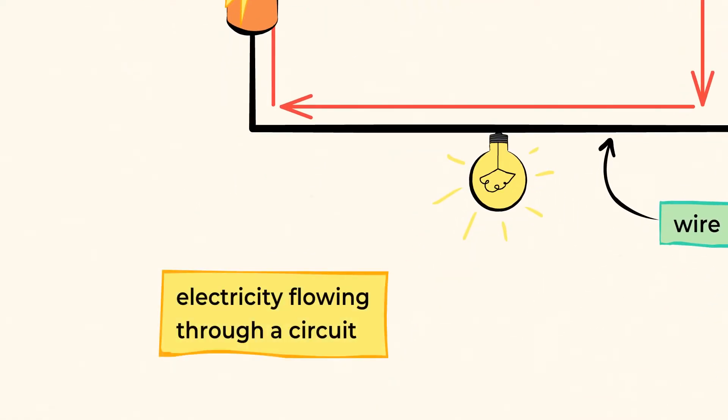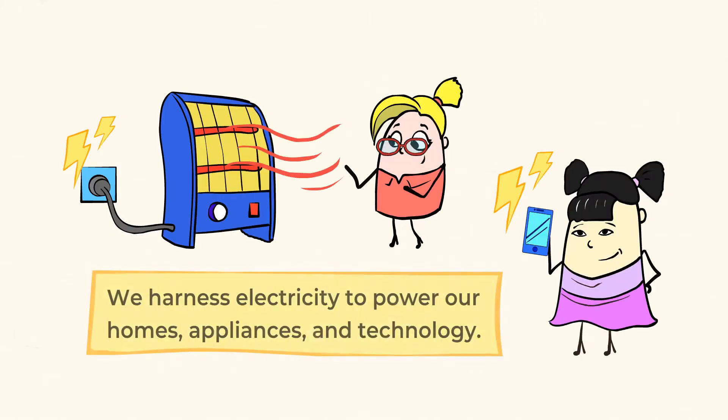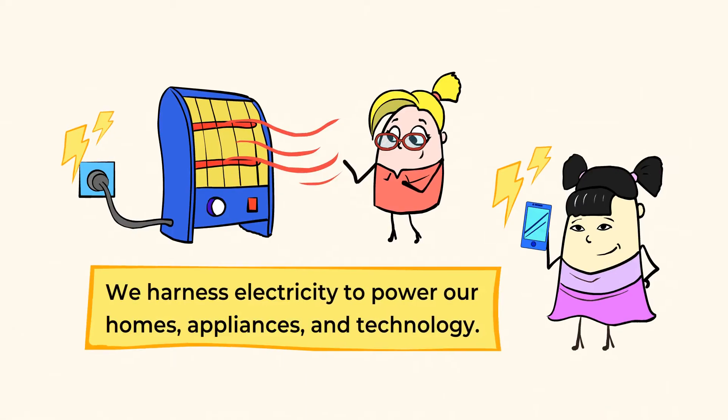Electricity flowing through a circuit is called a current. In our daily life, we harness electricity to power our homes, our appliances, and technology. We've figured out how to create circuits and how to control the flow of electricity through wires and other materials that conduct electricity.